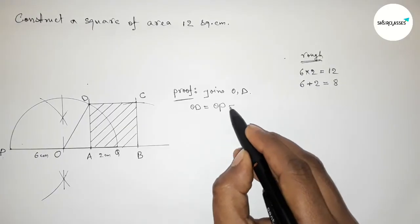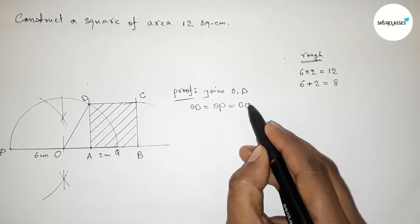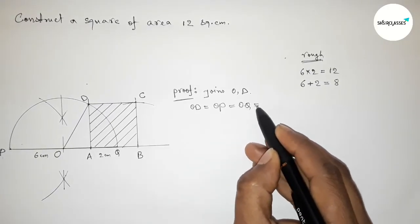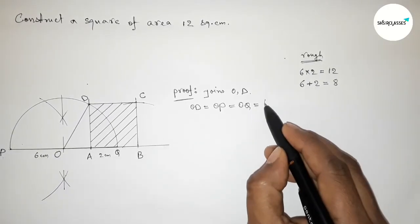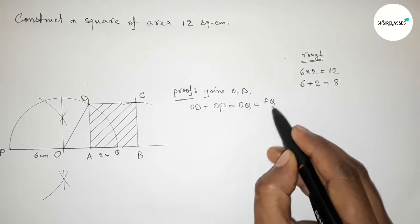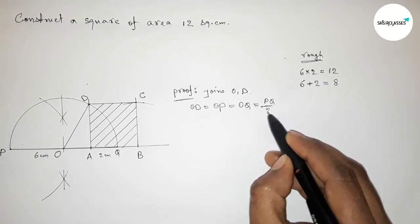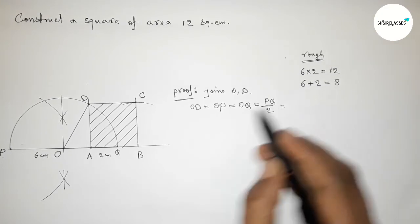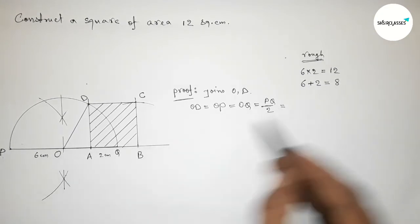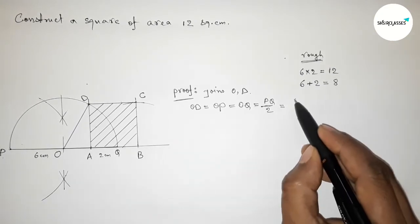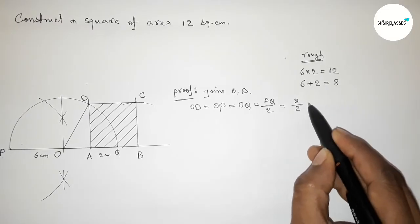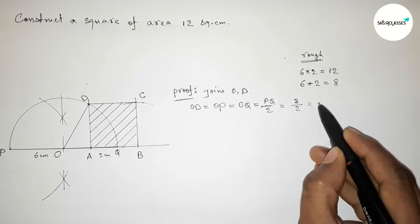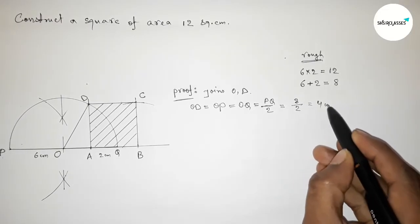Because these are all radii of the semicircle, which bisects the line PQ. The total length PQ is eight, so the radius equals eight divided by two — obviously four centimeters. So OD equals OP equals OQ equals four centimeters.